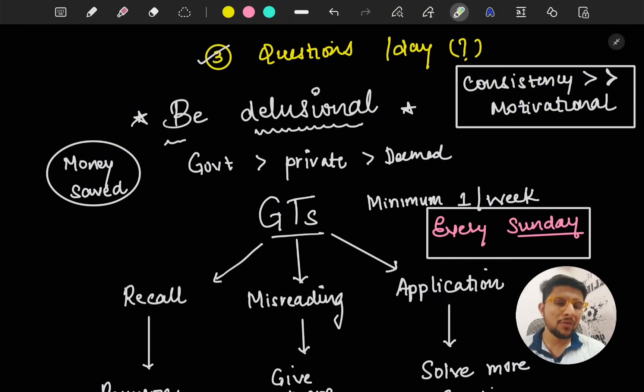One simple motivational thing: think of the money you'll be saving if you get a government seat over private, or private over deemed. If you get a private seat, you'll be paying at least 30 lakhs in the next three years, and if you get a deemed seat, you'll be paying somewhere around one crore. If you work genuinely hard and crack this, you'll be saving that money. That's the basic motivation you should have.